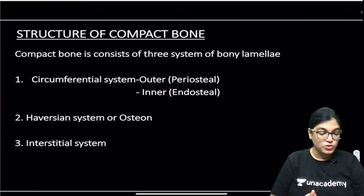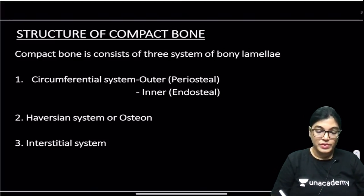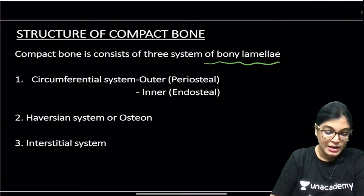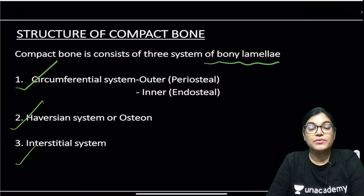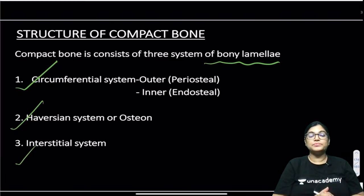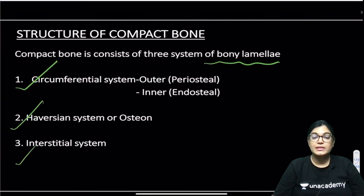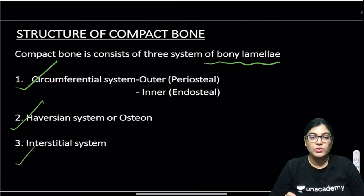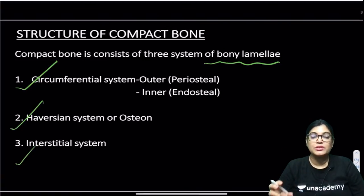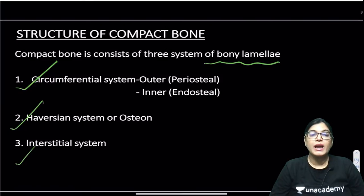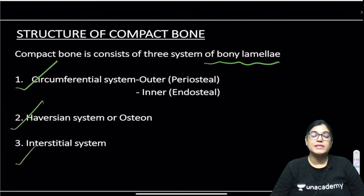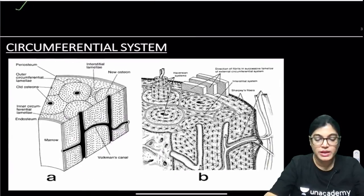The structure of compact bone: there are three systems of bone laminas — circumferential lamina, Haversian system, and interstitial system. In the Haversian system, there is a central Haversian canal through which blood vessels, nerves, and lymphatics enter the bone. This is surrounded by concentric laminas, and in those laminas lie lacunae containing osteocytes.